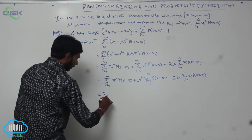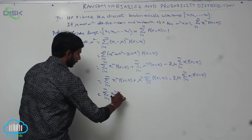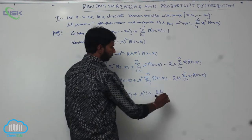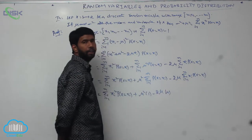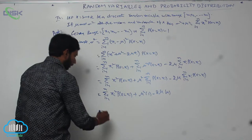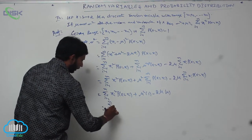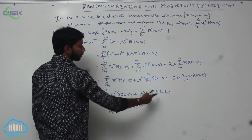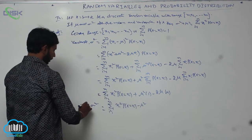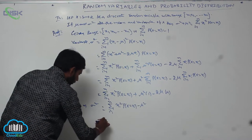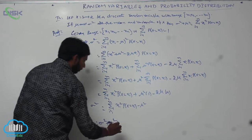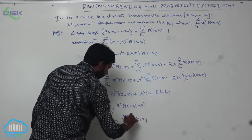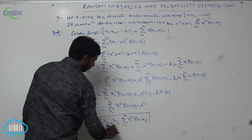Substitute the values: sigma i equals 1 to n of x_i square into p of x equals x_i, plus mu square into 1, minus 2 mu into mu. Here sigma i equals 1 to n of x_i into p of x equals x_i is the mean. This simplifies to sigma i equals 1 to n of x_i square into p of x equals x_i, minus mu square, since mu square minus 2 mu square equals negative mu square. Therefore, sigma square plus mu square equals sigma i equals 1 to n of x_i square into p of x equals x_i.